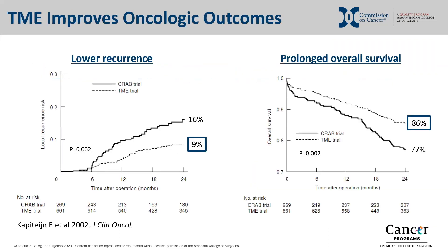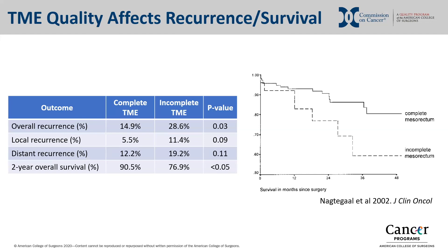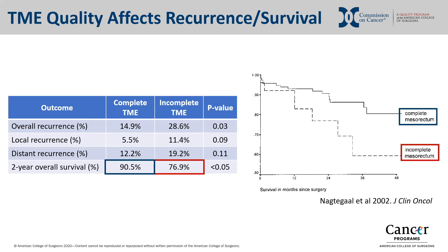TME has been long recognized to improve oncologic outcomes in rectal cancer surgery since the landmark analysis by the Stockholm Colorectal Cancer Study Group. After implementing a surgical training program for TME, they assessed two-year operative outcomes. Patients treated with TME benefited from improved two-year local recurrence and overall survival rates. Importantly, it is not enough to perform a TME — it must be performed well. Complete TME specimens are associated with improved overall recurrence and two-year overall survival rates amongst patients with already negative margins, indicating that a negative microscopic margin alone is not enough to maximize benefit to the patient, and that the quality of the TME specimen matters.